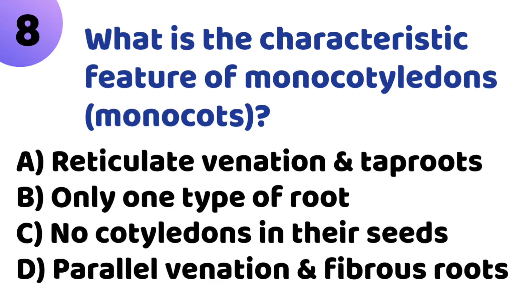Eighth question: What is the characteristic feature of Monocots? Option A: Reticulate Venation and Tap Roots. Option B: Only one type of root. Option C: No cotyledon in their seeds. Option D: Parallel Venation and Fibrous Roots. The correct answer is Option D, Parallel Venation and Fibrous Roots.